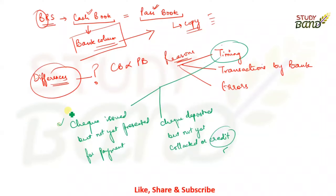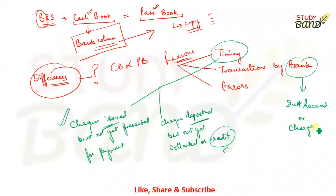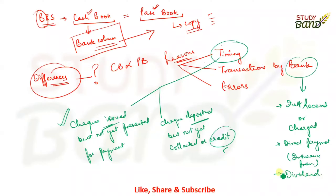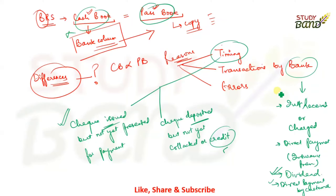The second reason is transactions recorded directly by the bank — such as interest received or charged, direct payment of insurance premium, dividend directly collected by bank, or a customer depositing money directly into your bank. In all these cases, the pass book gets the entry but the cash book does not, causing a mismatch. The third reason is errors — errors can occur on both sides.